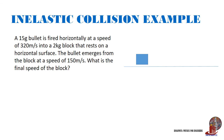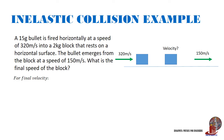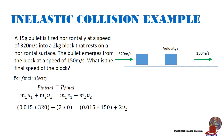Suppose we have the last example: a 15-gram bullet is fired horizontally at 320 meters per second into a 2-kilogram block resting on a horizontal surface. The bullet emerges from the block at 150 meters per second. What is the final speed of the block? Working with conservation of momentum: M1U1 plus M2U2 equals M1V1 plus M2V2. Plugging values: 0.015 times 320 plus 2 times 0 equals 0.015 times 150 plus 2 times V2. The final velocity of the block is 1.275 meters per second.